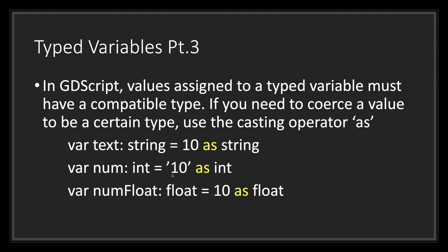Normally this would throw an error. However, because we're using the casting operator as followed by the data type we want to convert it to, we will again avoid throwing an error in GDScript. In this case, GDScript will return the string value 10 as an integer 10. So now our variable num has the assigned value integer 10.